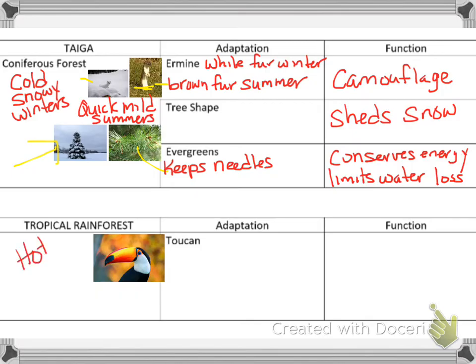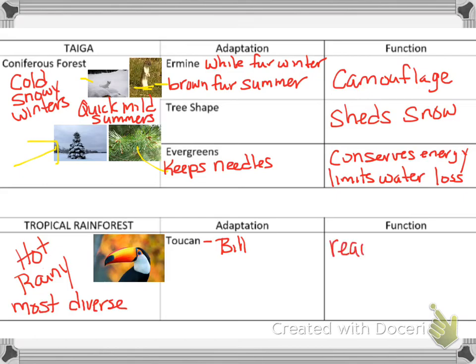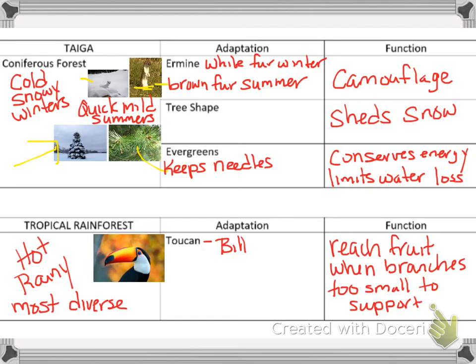Next we're moving on to the tropical rainforest, which is hot and rainy and the most diverse area. There are tons of animals and adaptations, but we're just going to talk about the toucan. The toucan's bill is its adaptation — it's shaped so long that it can reach fruit when the branches are too small to support the weight of the bird. It grabs fruit that way.